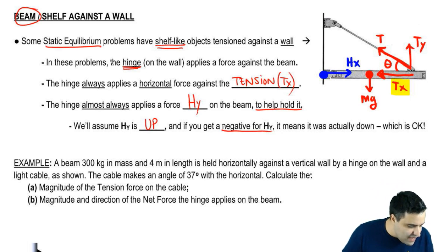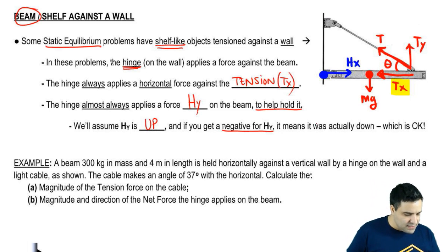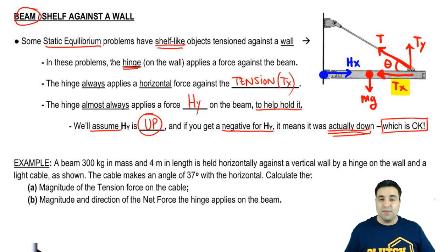The reason why I say assume is because sometimes it's going to be down. In fact, if you get a negative for Hy, meaning you're calculating Hy and you end up with a negative number, that means that you guessed it incorrectly. You assumed the wrong direction. If you get a negative for Hy, Hy was actually down. But that's okay. It doesn't mean your answer is incorrect. It doesn't mean that you have to start the problem again.